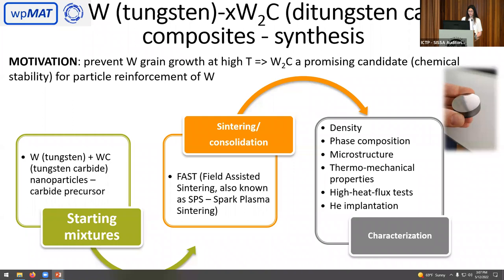Tungsten carbide particles are obtained using carbide precursor synthesis. Using this as a starting mixture, we apply the sintering process by fast field assisted sintering, also known as SPS — spark plasma sintering — and we get some consolidated pallets. The consolidated pallets are then characterized in terms of density, phase composition, microstructure, thermomechanical properties, and so on.